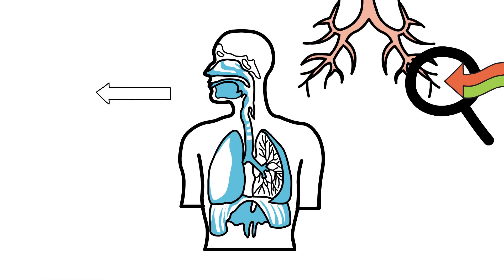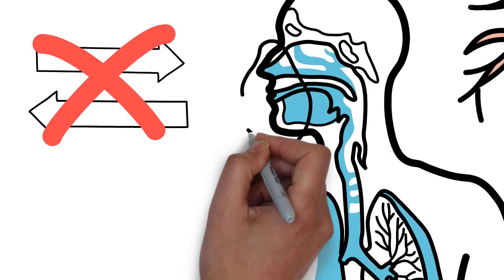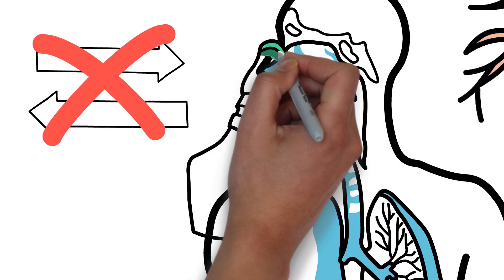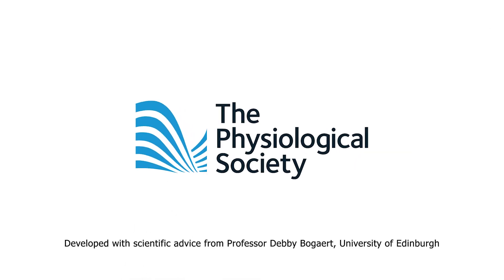Professor Bogart says that if COVID-19 affects this process, our body becomes less able to take on oxygen and get rid of that carbon dioxide over time, and some people will need a ventilator to help them breathe.